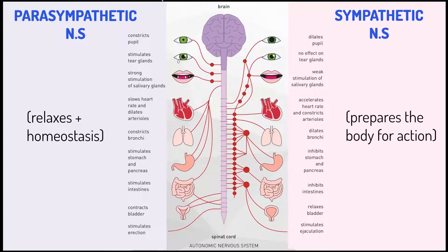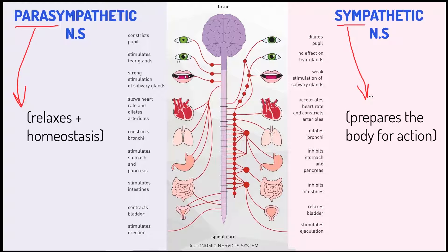The parasympathetic nervous system is responsible for relaxing and homeostasis, while the sympathetic nervous system prepares the body for action. Here are the different roles they have in each of the body systems.